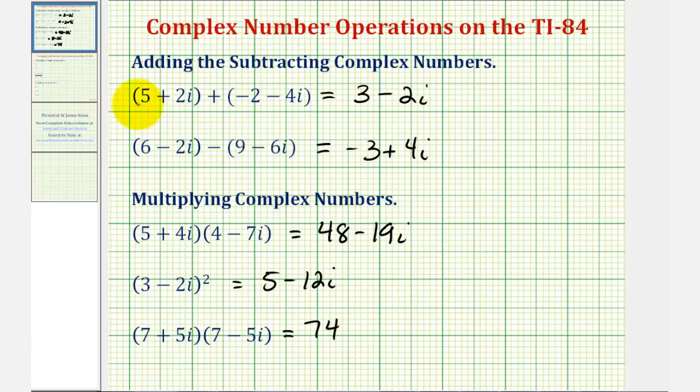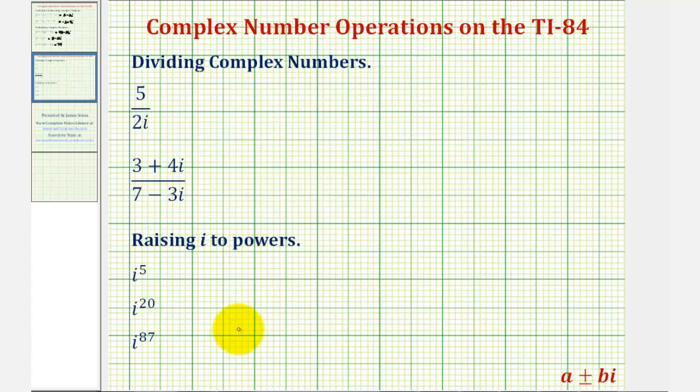Now let's take a look at quotients, and raising i to various powers. Looking at our quotients, notice how, for a complex number, we're not allowed to have i in the denominator. Normally what we do is multiply the numerator and denominator by the conjugate of the denominator. But again, for these examples, we'll perform this division on the graphing calculator.